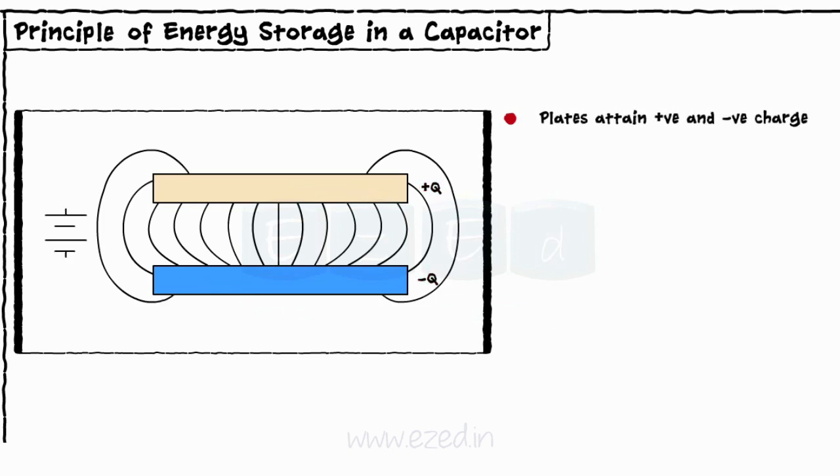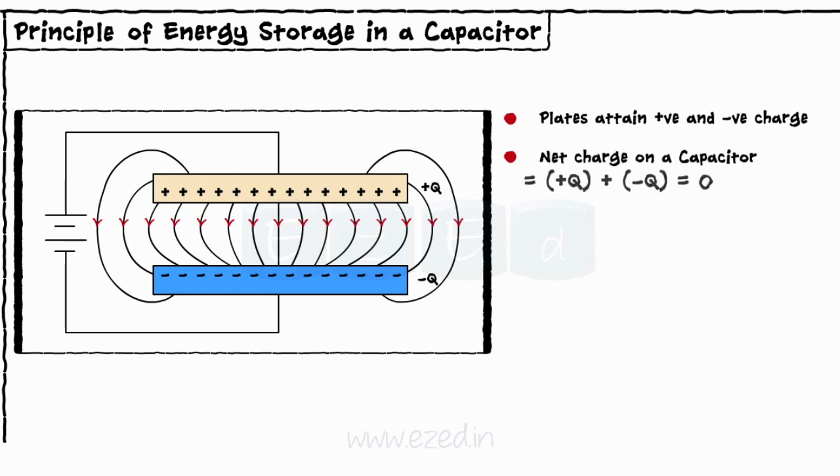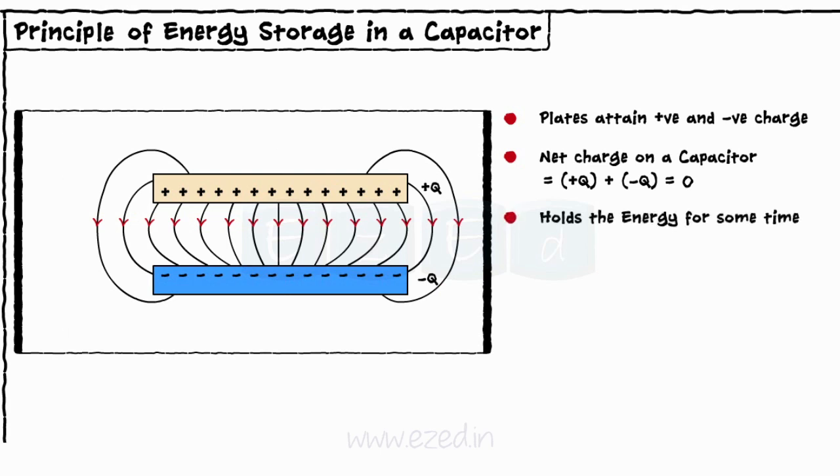When a capacitor is charged, the negative charge is removed from one side of the capacitor and is placed onto the other, leaving one side with a positive charge plus Q and the other with a negative charge minus Q. The net charge of the capacitor as a whole remains equal to zero. Even if we remove the battery, the capacitor still holds the energy for some time.